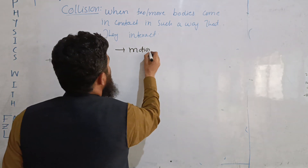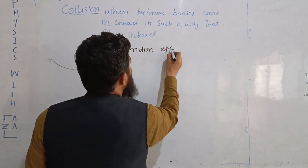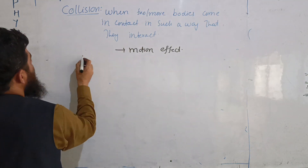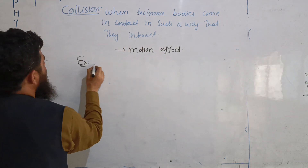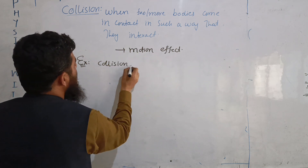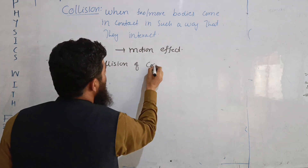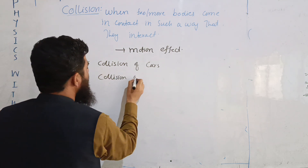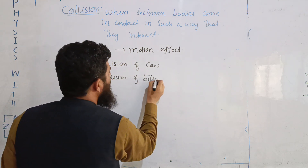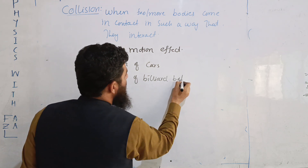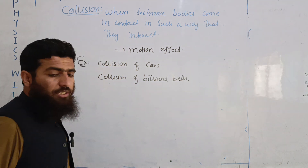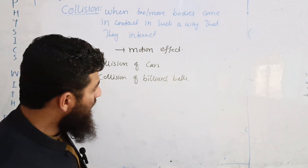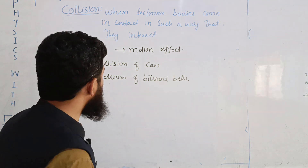We have a collision effect. Examples include: collision between cars, collision of billiard balls as in snooker, and collision of a particle with a nucleus — or when a particle passes near to a nucleus and the nucleus deflects its motion.